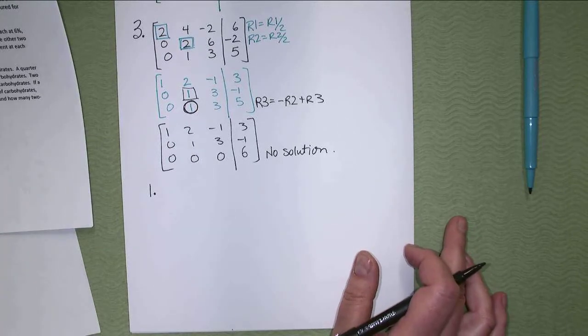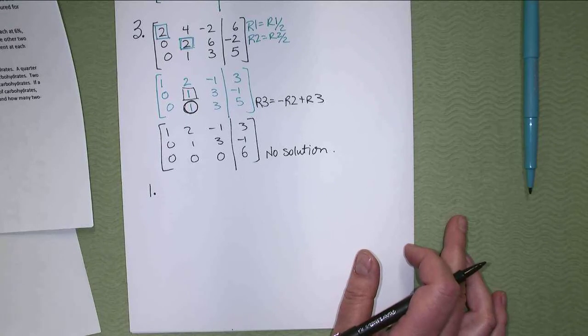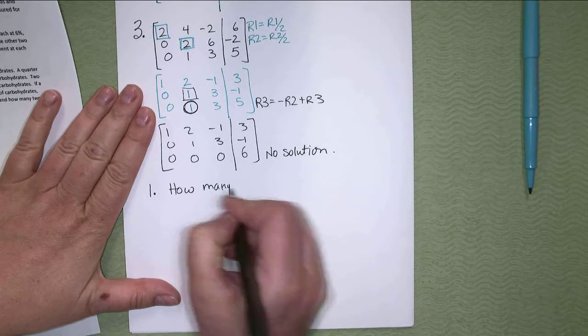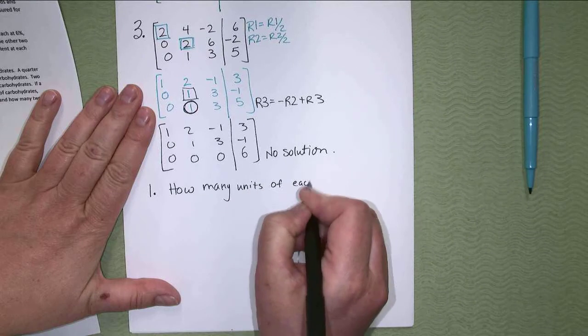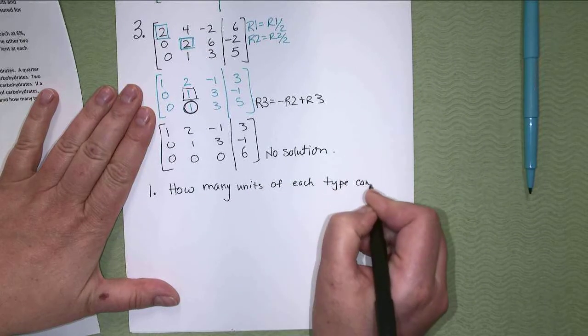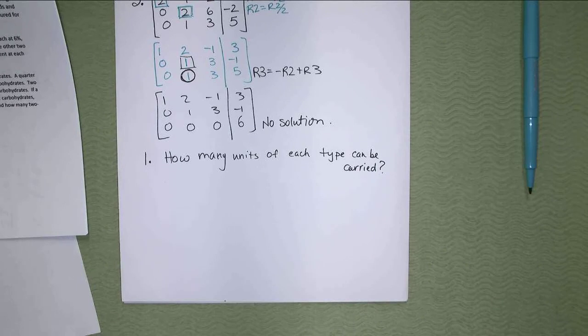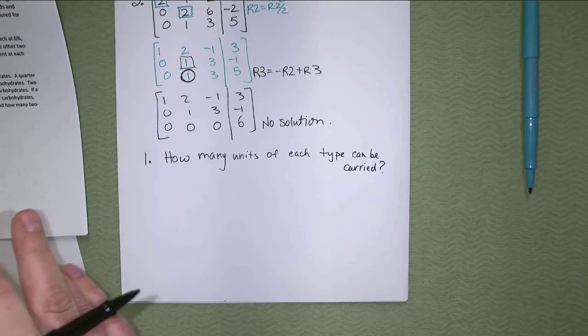So this says set up the systems, indicate what the variables represent. So I usually make these questions worth four. One for stating what the variables represent, and then one for each equation, if there's three equations. I don't really mark the table, except to give you part marks if your equations are wrong. But I look for the equations themselves. So the table really is not the answer. The table is how you use to make the equations. Okay. So the King Trucking Company has an order for three products for delivery. What you're looking for is the question. So where does it say how many or how much?